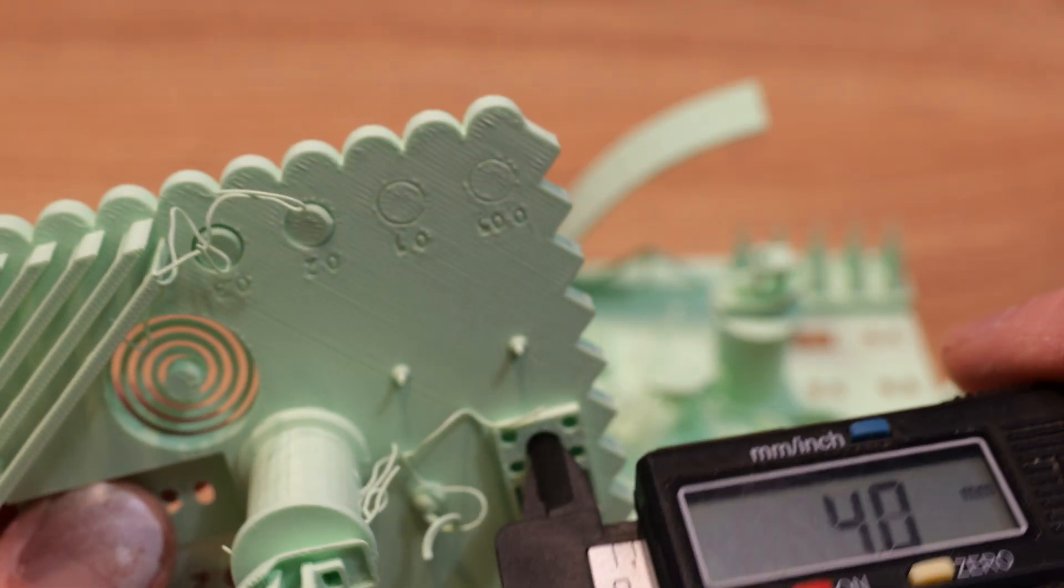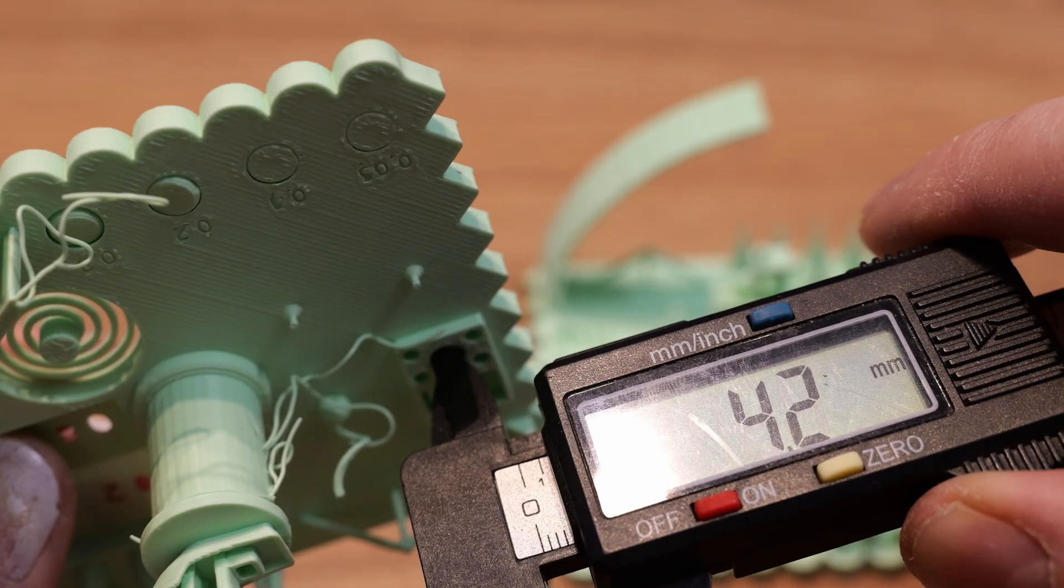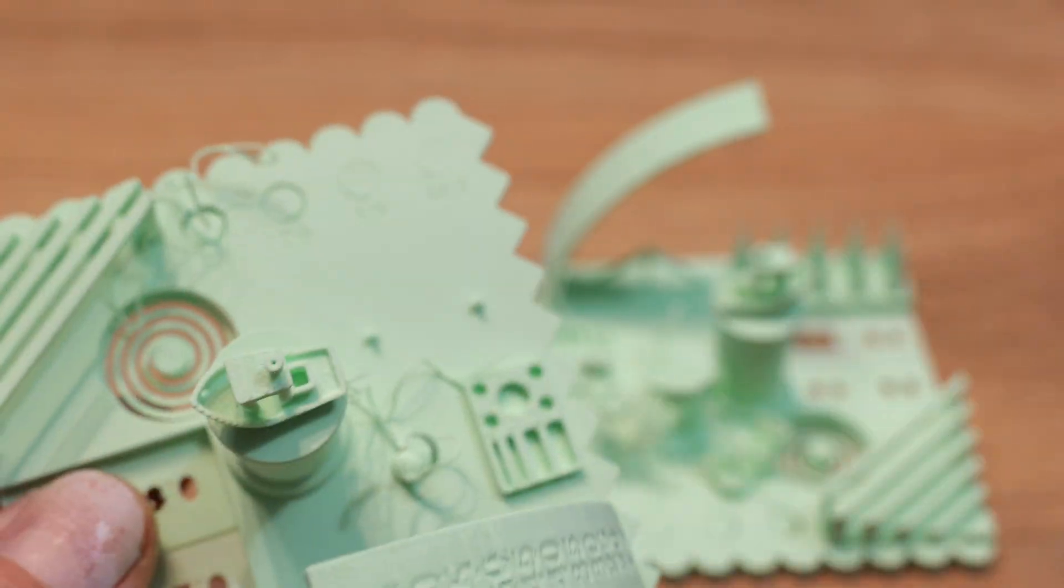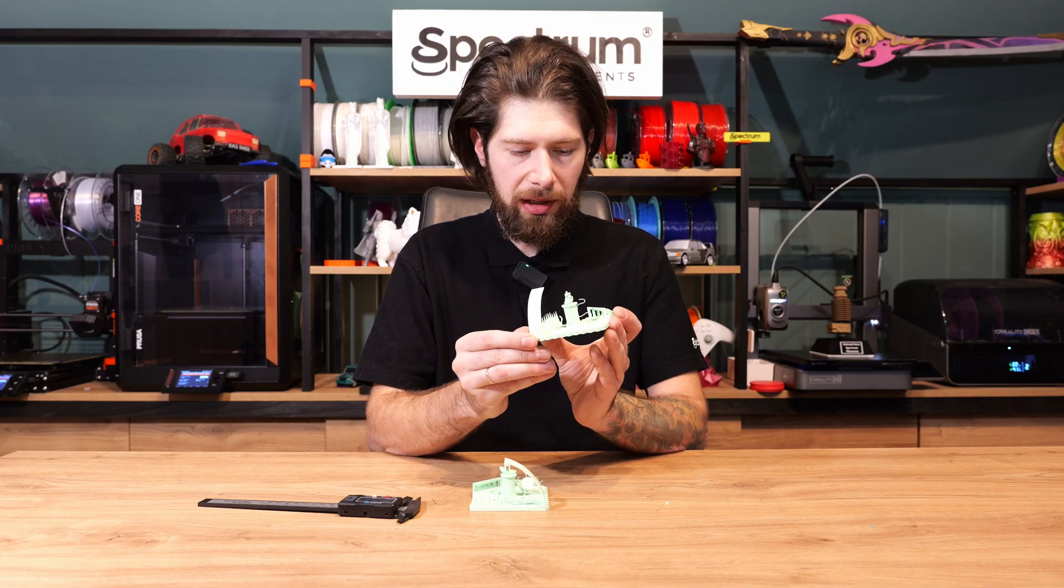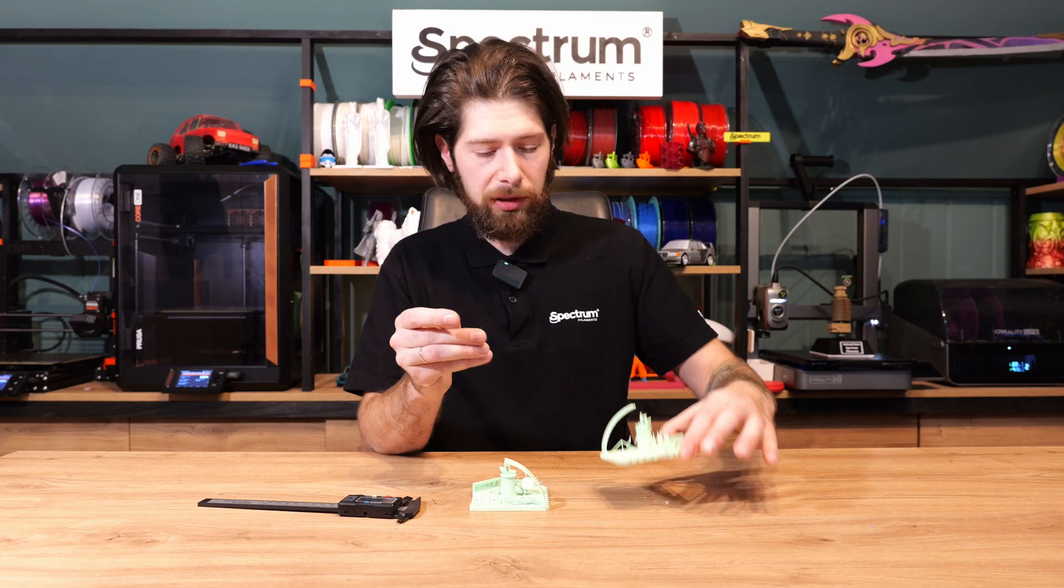And the last, this spiral shape looks pretty decent. I think it was printed in a good speed, looks, everything looks mostly fine. So pretty good job for the Bamboolab A1.